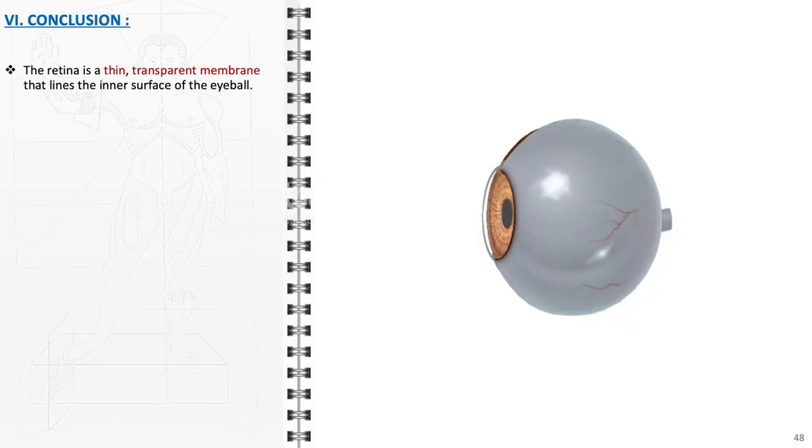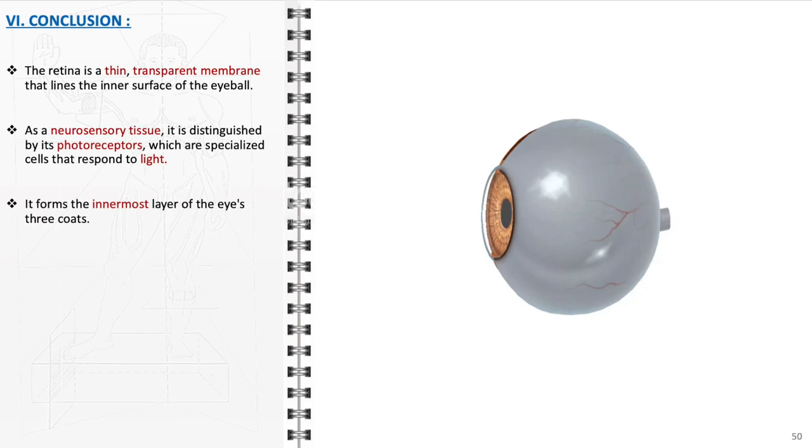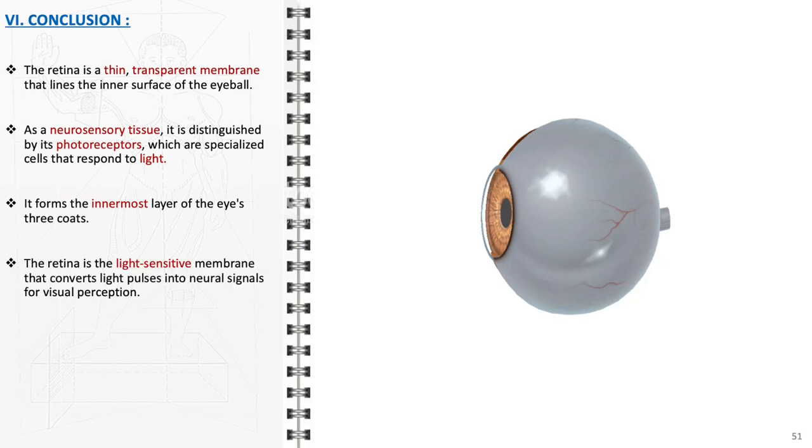To summarize, the retina is a thin, transparent membrane meticulously lining the inner surface of the eyeball. Functioning as a critical neurosensory tissue, it is notable for its photoreceptors, rods and cones. These specialized cells are highly responsive to light, enabling the detection of both brightness and color. The retina represents the innermost layer of the eye's three coats, positioned strategically to intercept light passing through the lens. As a light-sensitive membrane, it is instrumental in the transduction process, where light pulses are transformed into neural signals. These signals are then relayed to the brain via the optic nerve, culminating in the complex process of visual perception.